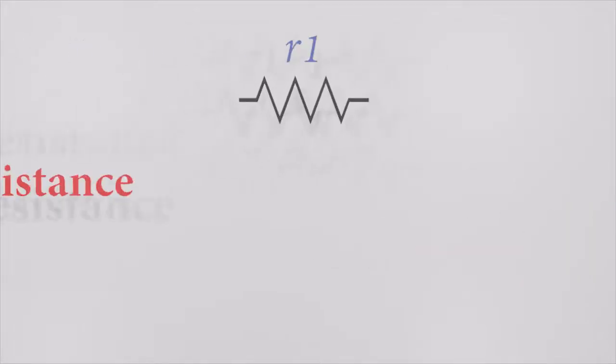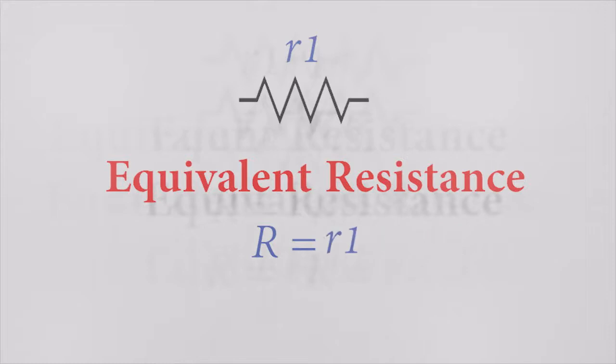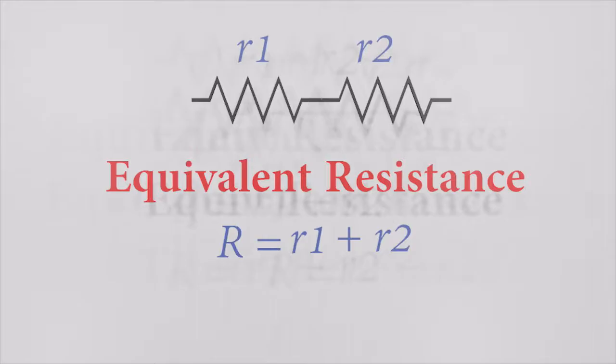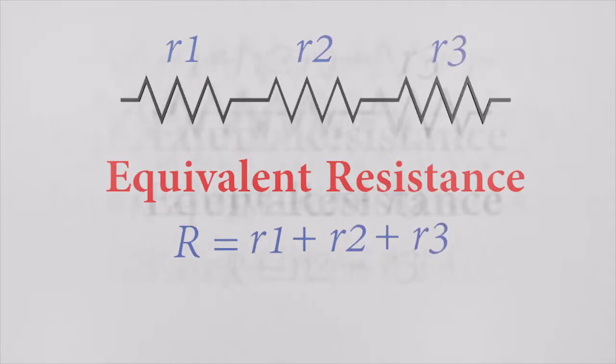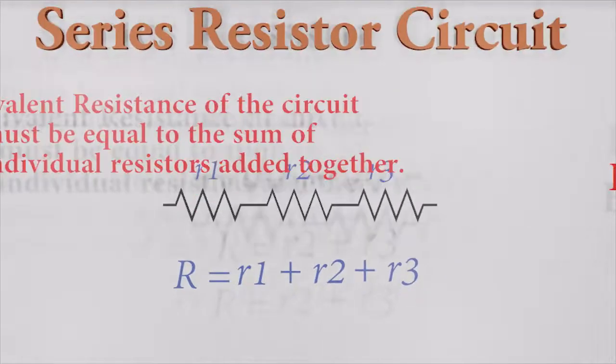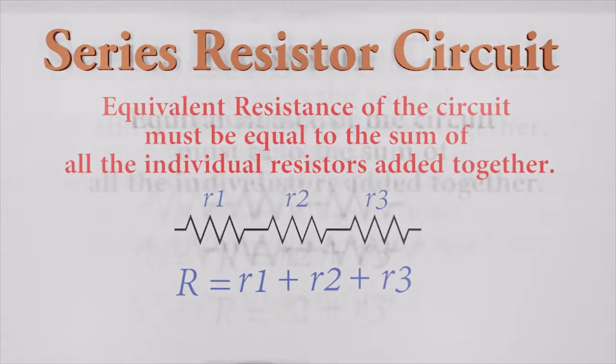This is the symbol of resistor. The total resistance is now R1. If we add another resistor that has R2 resistance, the total resistance becomes R1 plus R2. Let's add another R3 resistor in series. The total resistance increases furthermore. Now the total resistance is R1 plus R2 plus R3. So in general, the total resistance of the series resistors are equal to the sum of individual resistance.